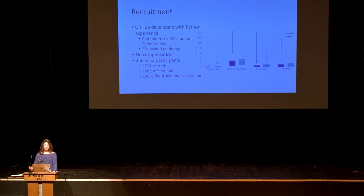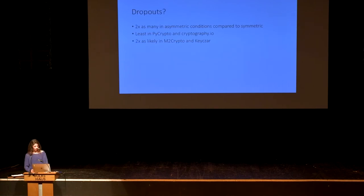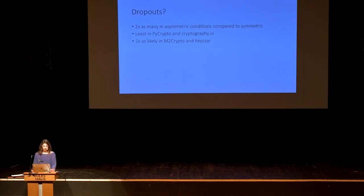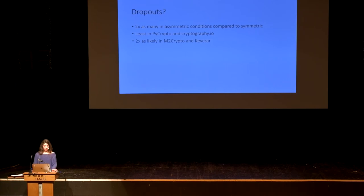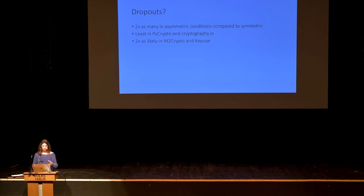One important usability metric was whether people who started the study could actually finish. In the asymmetric condition compared to the symmetric condition, twice as many people just stopped working on a task at some point. In general, for PyCrypto and Cryptography.io, few people dropped out. Dropouts were twice as likely when people had been assigned to M2Crypto or Kizar. This could be due to incomplete documentation, or perhaps not being able to tell quickly whether a feature was offered, leading people to search and eventually give up.